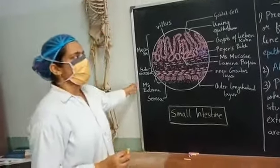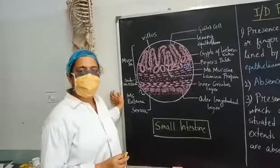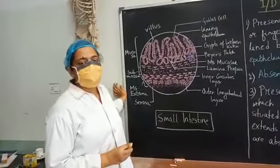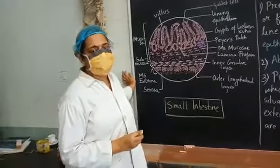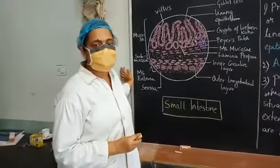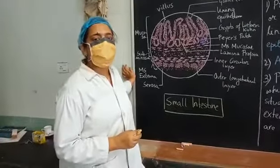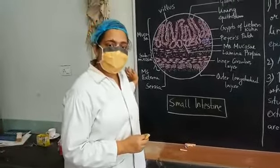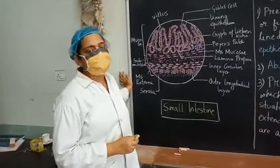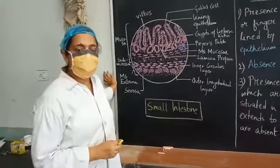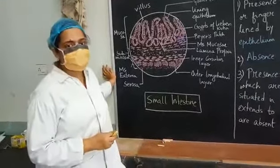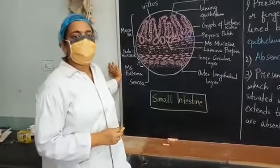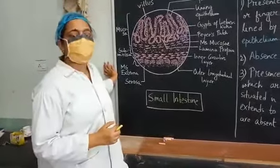Today we are going to discuss the histology of the small intestine. Please remember that for histology we do not have to identify the jejunum and ileum separately. In our previous class we have already discussed the histology of duodenum in detail. There we discussed the detailed structure of the villi also.